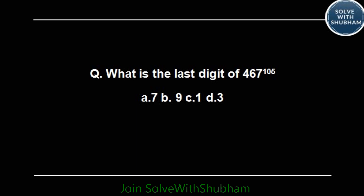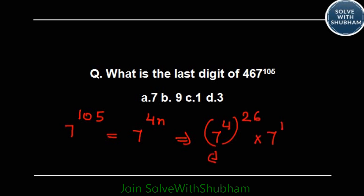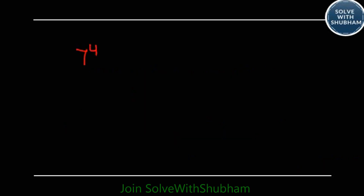What is the last digit of 467 to the power 105? As discussed, we just find the unit digit of 7 to the power 105. Cyclicity of 7 is 4. Dividing 105 by 4 gives 26 remainder 1, so we write 7 to the power (4×26) into 7 to the power 1. The first part ends with 1 and the second ends with 7, so our answer is 7. Option A.